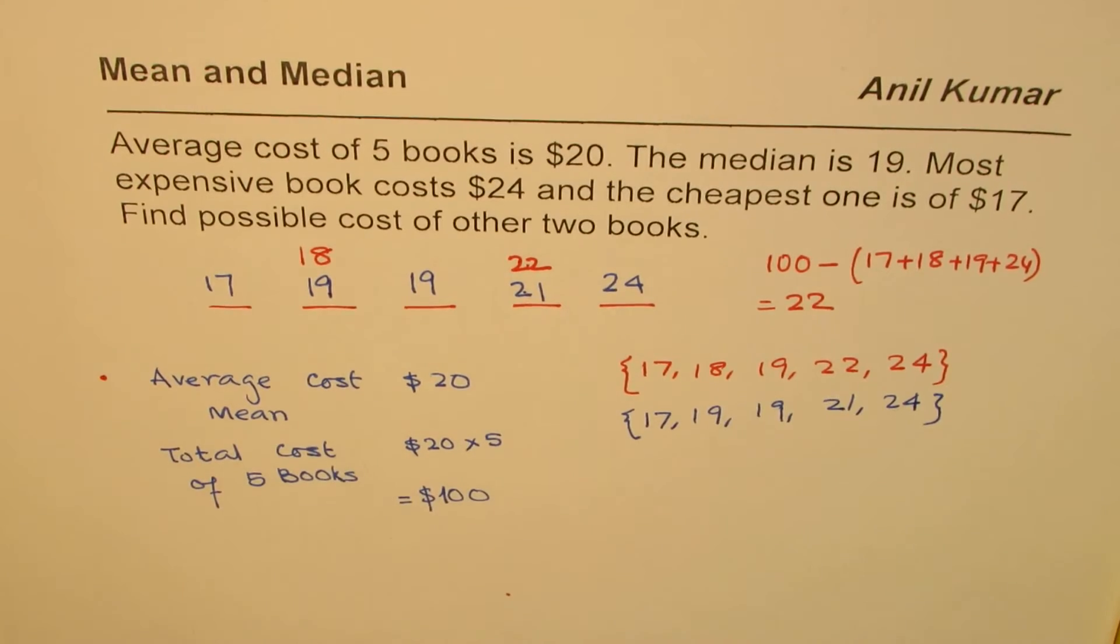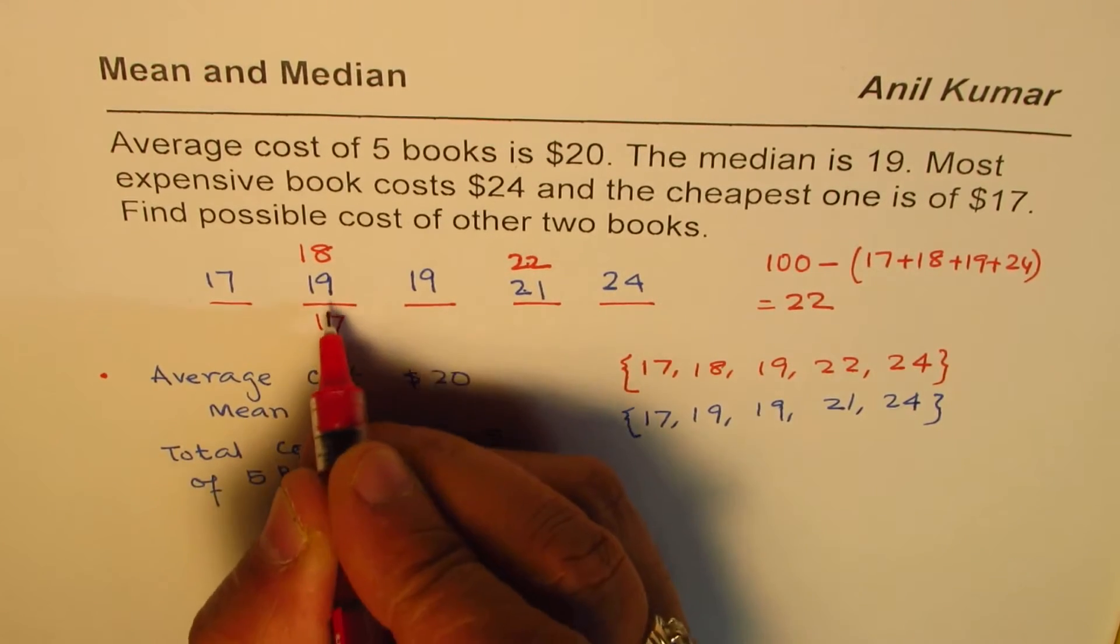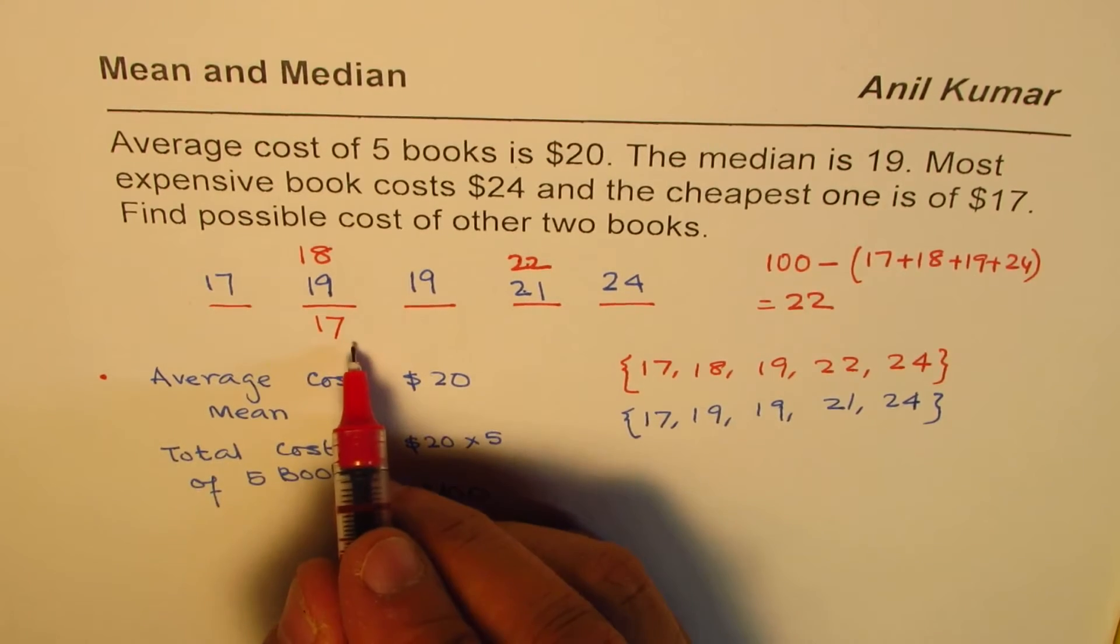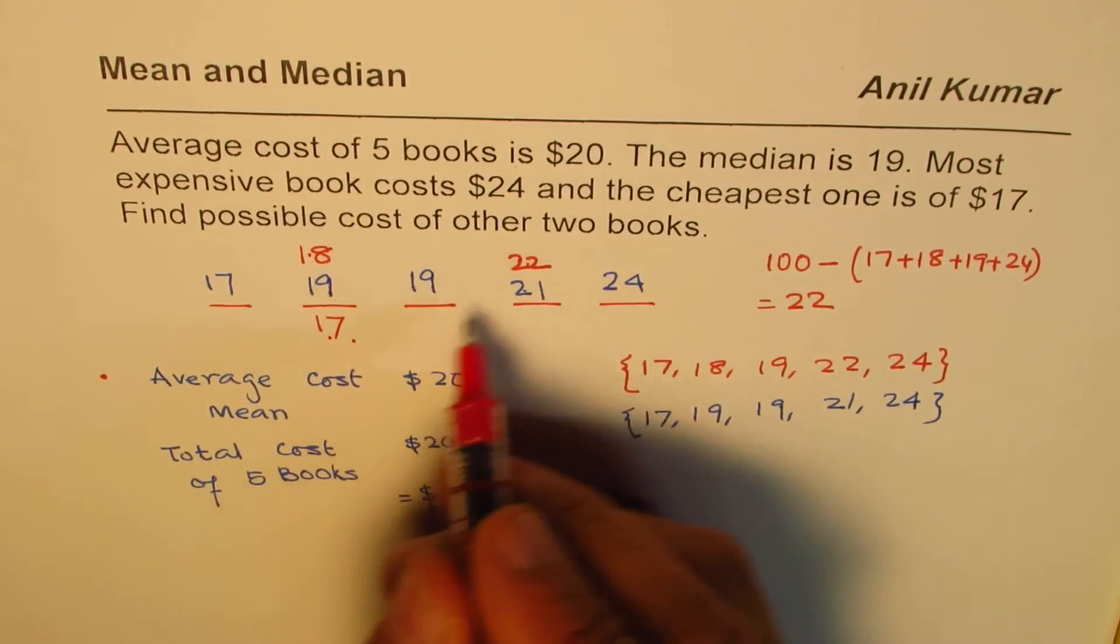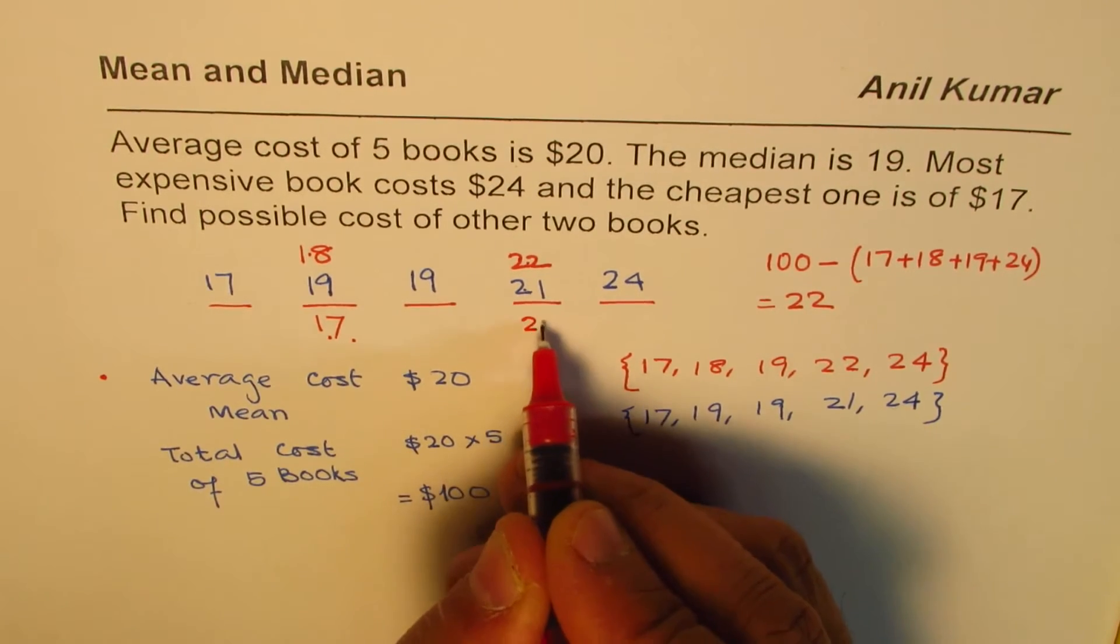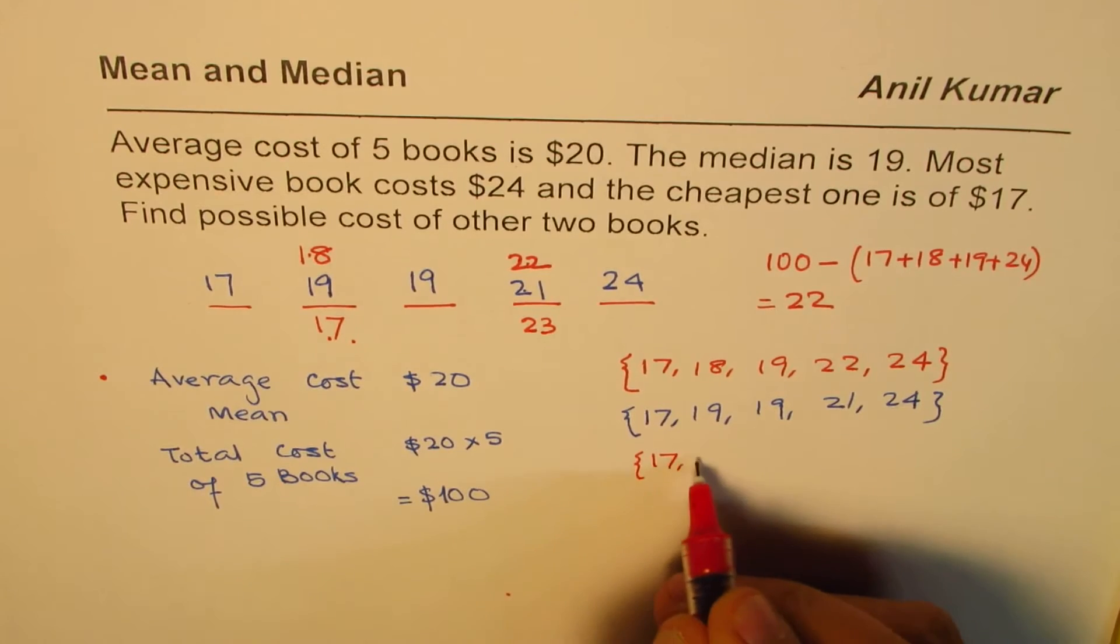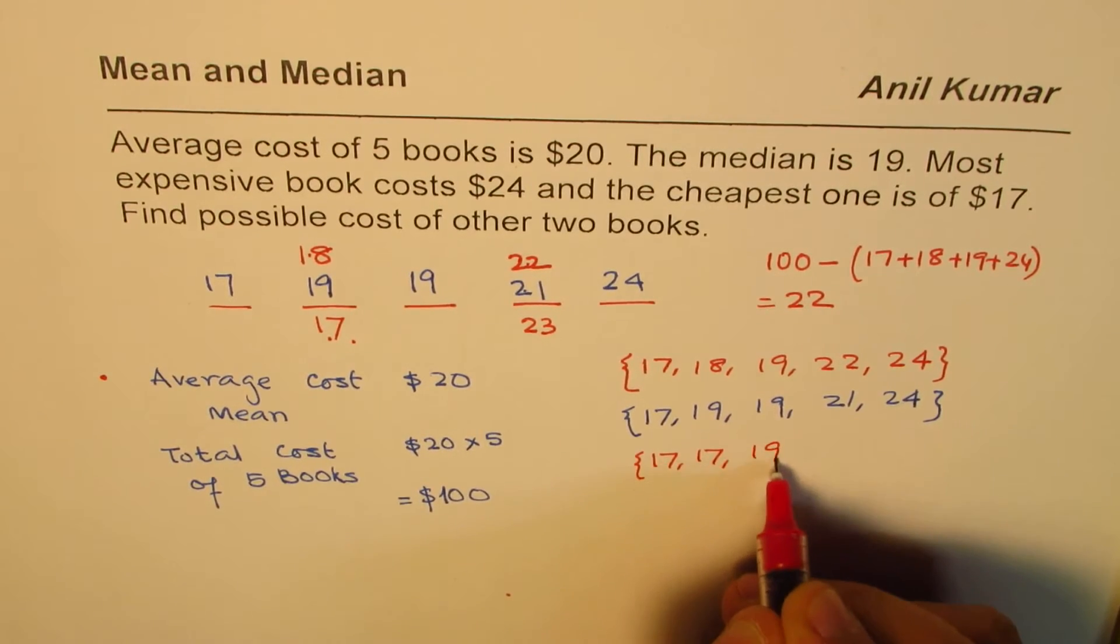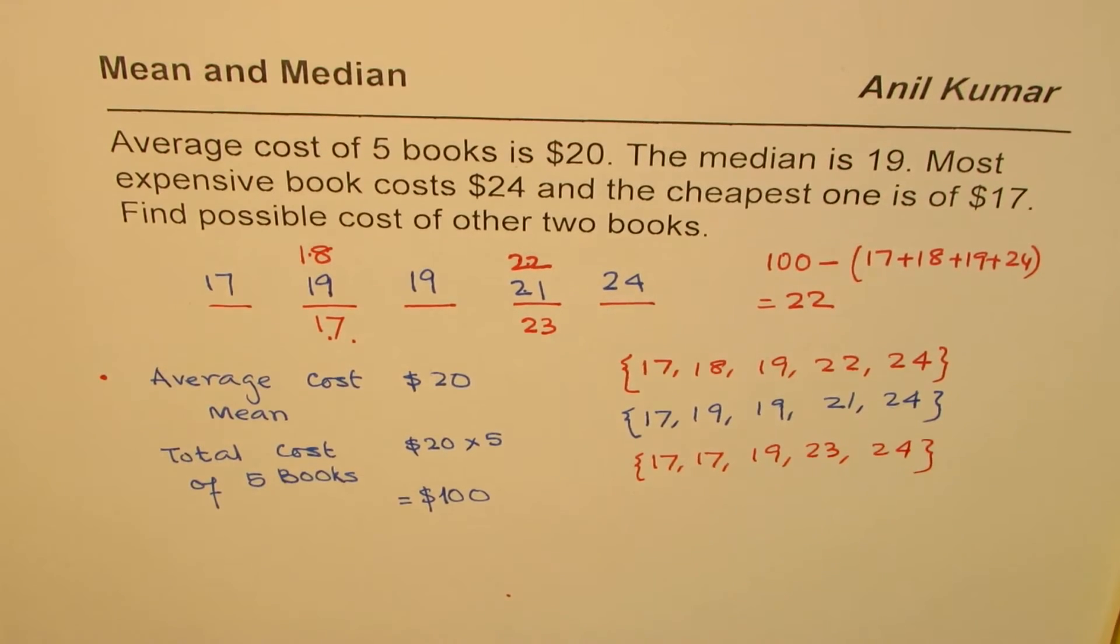Well, I could have taken this cost as 17 also. Why 19, 17 also, right? In that case, if I take one less than 18, then this will be one more than 22. I'll get this as 23. So another combination, which is 17, 17, 19, 23 and 24 also works. Do you see that?